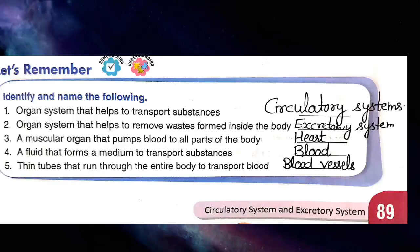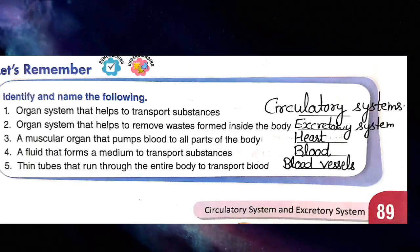Next is: organ system that helps to remove waste formed inside the body. कौन सा ऐसा system है हमारी body के अंदर जो waste को हमारी body से remove करने में help करता है? The correct answer is the excretory system.